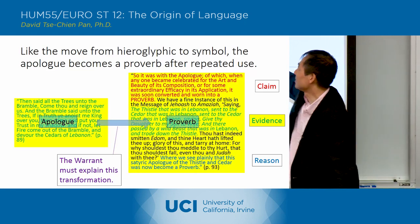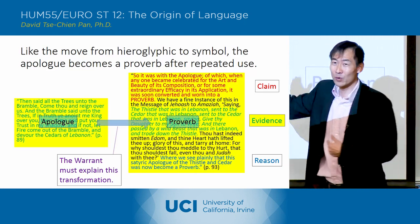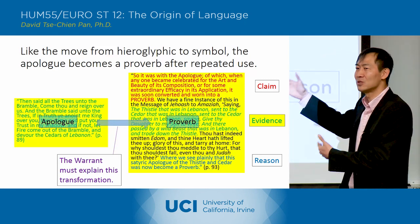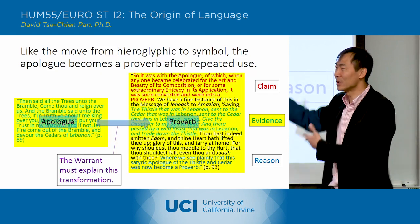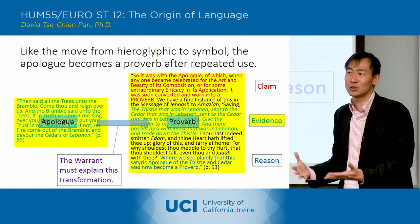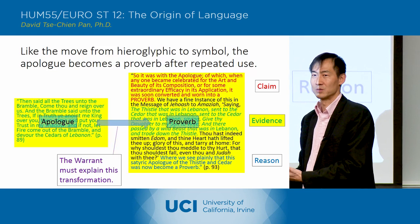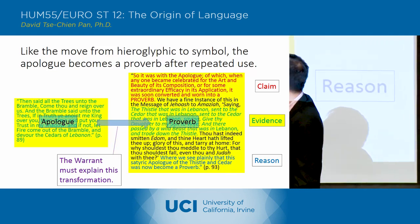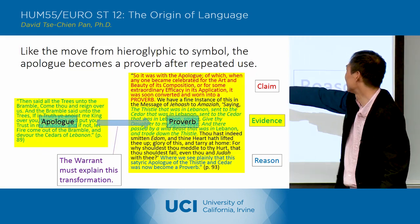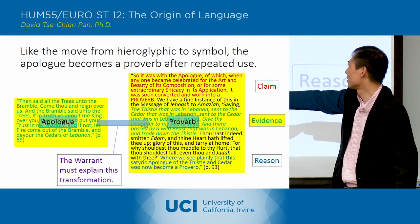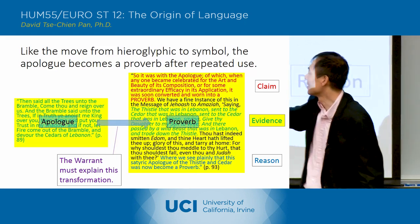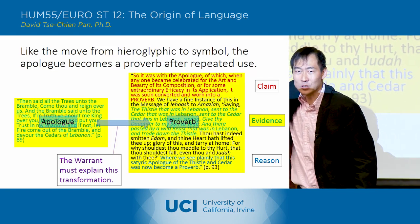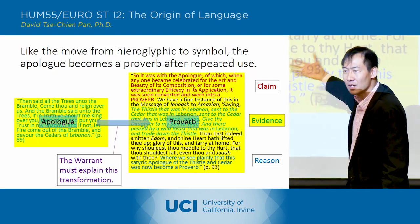What's clear here is that this passage is referring to the story as a story that everybody already knows. It's being used not as a story, but as a proverb. They don't have to tell the story anymore because everybody knows it, and therefore they can use it as a proverb. This satiric epilogue of the thistle and cedar has now become a proverb — there's a transformation. Once you use the epilogue enough, it turns into a proverb.